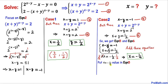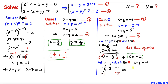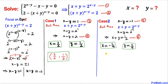Now we substitute x = −1/4 into equation five. Replacing x gives −1/4 − y = −1. Adding 1/4 to both sides, we get −y = −3/4, so y = 3/4. For case two, x = −1/4 and y = 3/4. The solution for case two is (−1/4, 3/4).